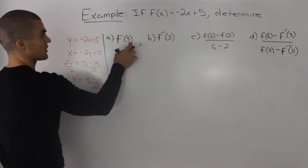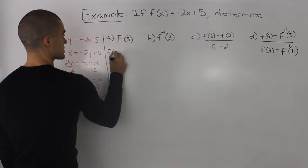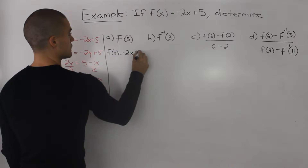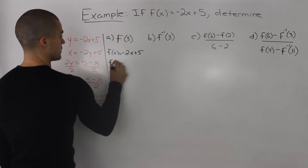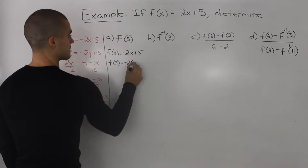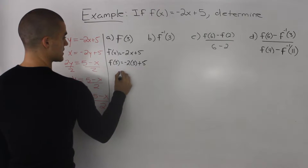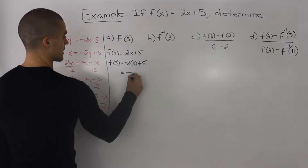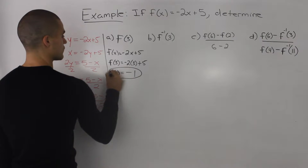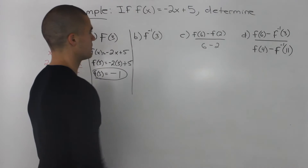So f(3) — we would use the original function, f(x) equals negative 2x plus 5. For f(3), we plug in 3 for x: negative 2 times 3 is negative 6, plus 5 is negative 1. So f(3) equals negative 1. That's the answer for part a.